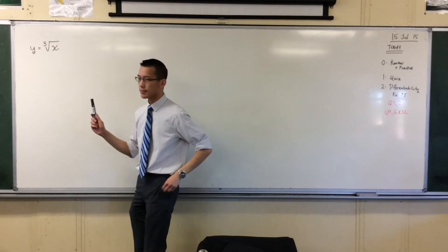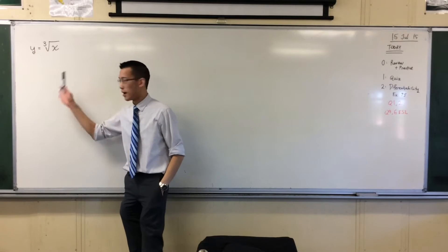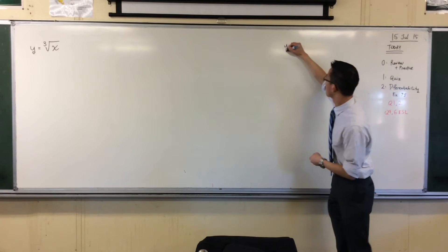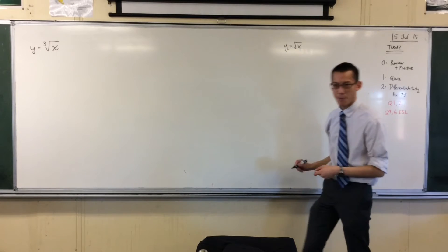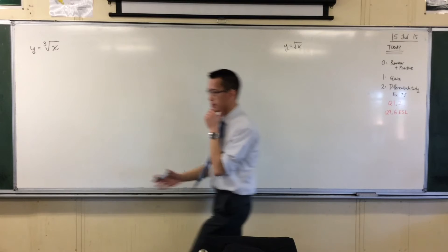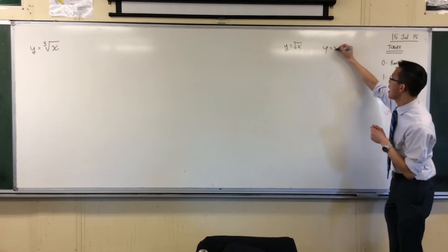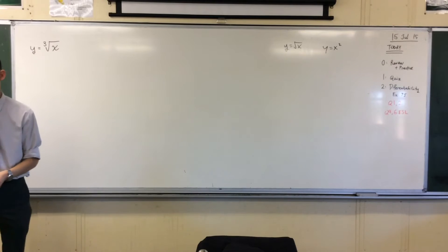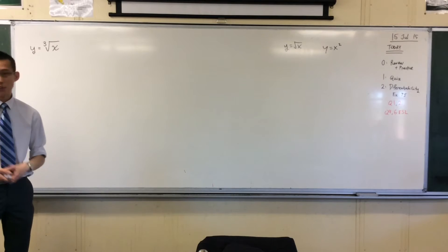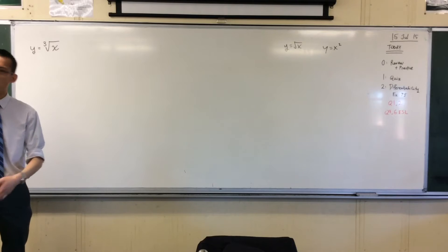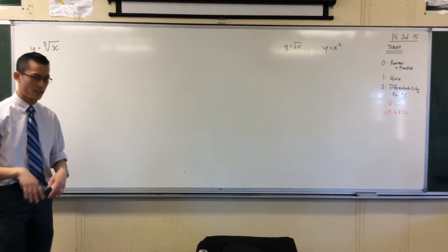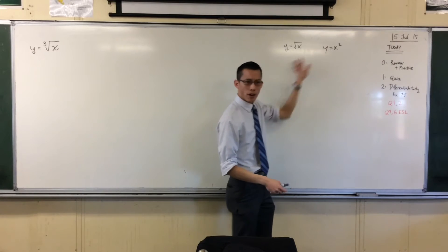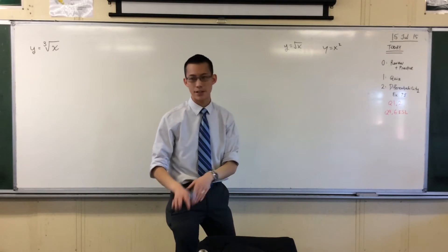Now, the cube root of a number is different from the square root of a number. Because when you think about, let's just cover it here. We were just laboring the point that the square root of x and the square of x are not exactly opposites to each other. They're not exactly opposites.